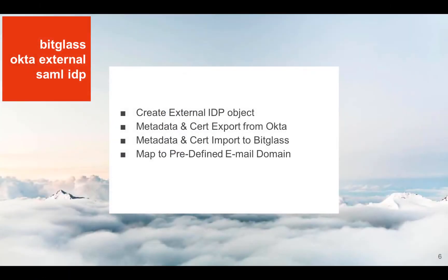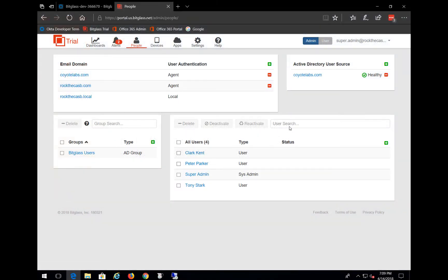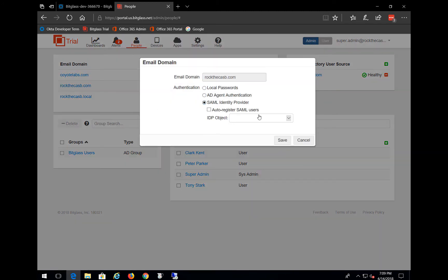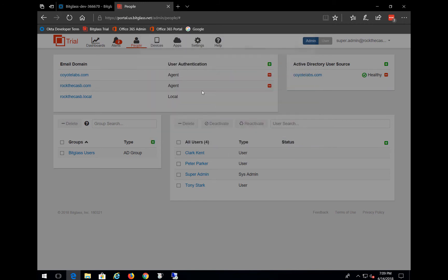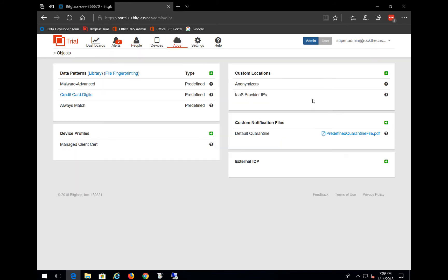Within the Bitglass admin console, we'll create an external identity provider object that points to Okta. This requires that we export the metadata and signing certificate from the Okta admin console, which we will then import into Bitglass. And then we'll glue everything together by mapping a Bitglass email domain to Okta. In the Bitglass admin console, you'll notice I have several email domains configured, but the one we're most concerned about is rockthecasby.com. Notice if I choose SAML Identity Provider, there's nothing available to select, and that's because we haven't defined any external identity providers.